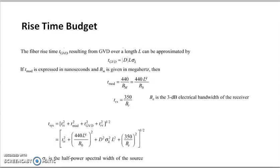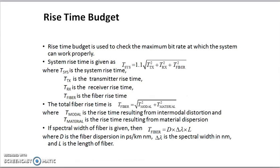Hello everyone. We started last lecture with the link budget — specifically the link power budget. Now we initialize the rise time budget. A rise time budget is used to obtain the minimum bit rate required for an optical system. Rise time budget analysis is a convenient method for determining the dispersion limitation of an optical fiber link.